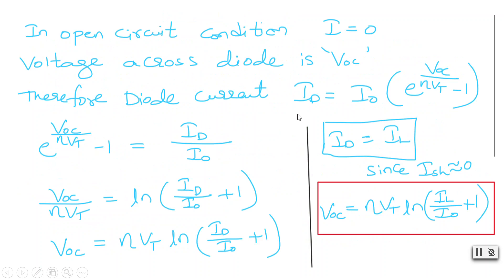The diode current Id equals I0 times (e to the power of diode voltage divided by η·Vt, minus 1). Since the diode voltage is Voc, we substitute it in. So we get e to the power (Voc / η·Vt) minus 1 equals Id divided by I0. If we take the exponential on this side it becomes a natural log, and in this way we simplify for Voc.